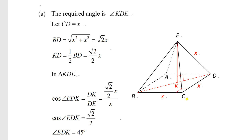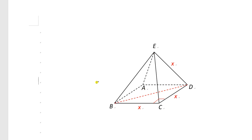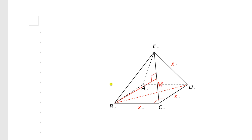For Part B, we need to find the angle between faces EBC and EDC. First, we find the intersecting line of the two faces, which is EC. Next, on each plane we draw a line perpendicular to EC. From point B, we draw a line perpendicular to EC and call the foot of that perpendicular M.